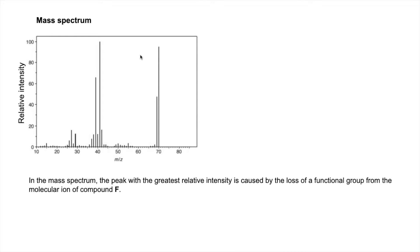So moving on to the mass spectrum now. The first peak you should look at is the one with the highest m/z value, so obviously this one here. So what's that telling us? That's the molecular ion peak at m/z 70. So the Mr of F is 70.